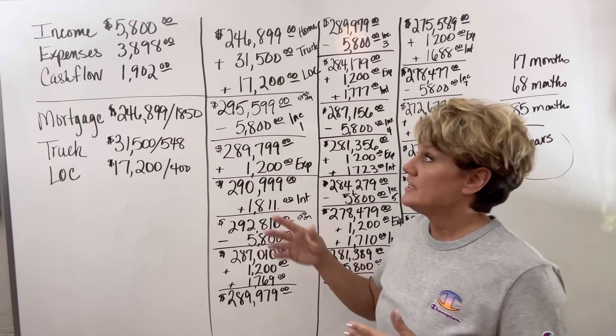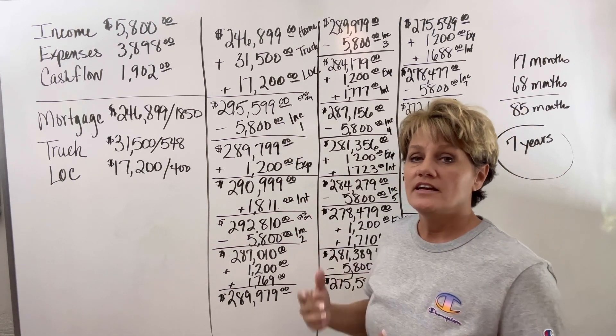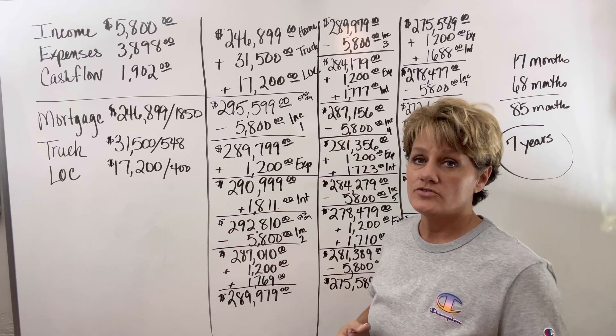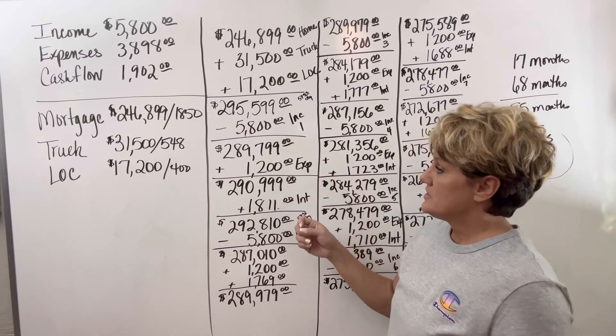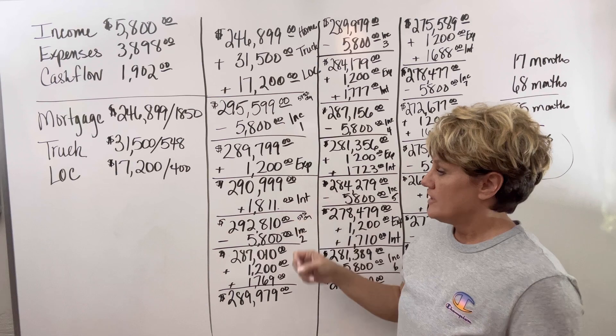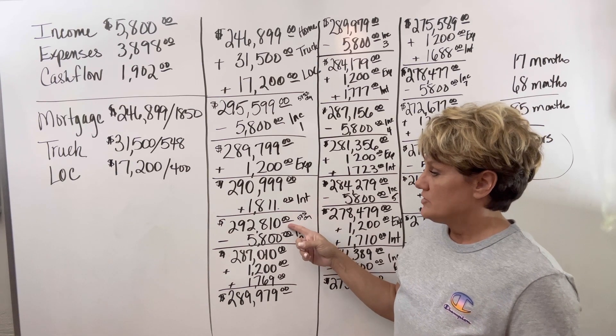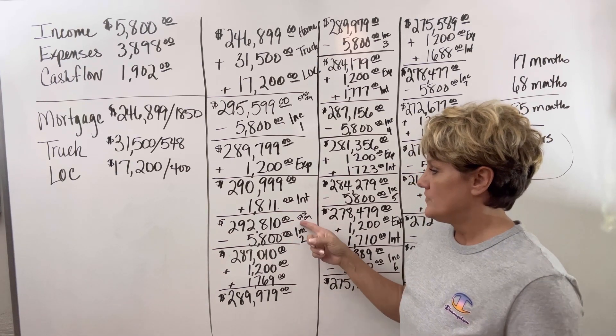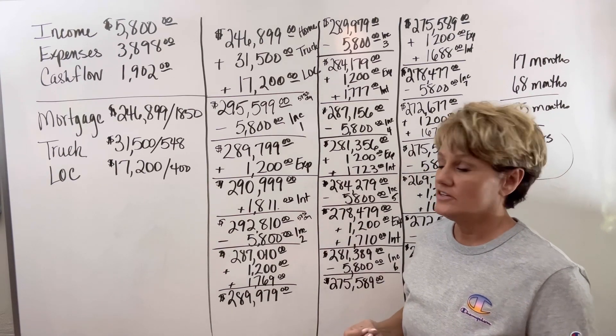So I am taking off of the high balance here just to give you an idea of the highest that interest charge will be. The expenses will come out, the interest will come out, and then the balance will be at $292,810. This is $58.96 a day in interest.